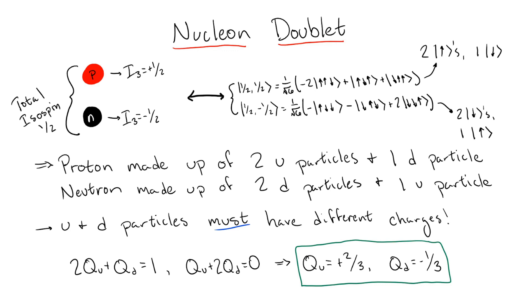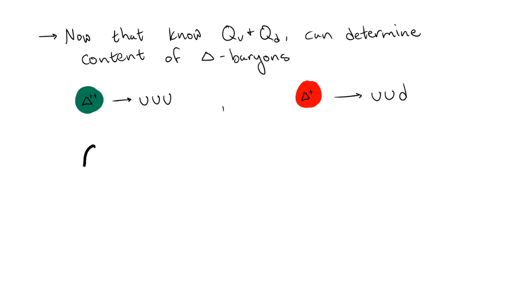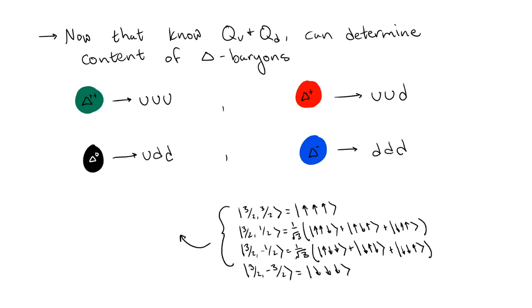What about the other isospin families? Luckily, this works out nicely for the delta baryons, with the isospin plus three half delta plus plus baryon being a combination of three up particles, the isospin plus one half delta plus being two ups and one down, isospin minus one half delta zero being one up and two downs, and finally the isospin minus three half delta minus being three downs, just like the spin three half quadruplet resulting from combining three spin half particles.